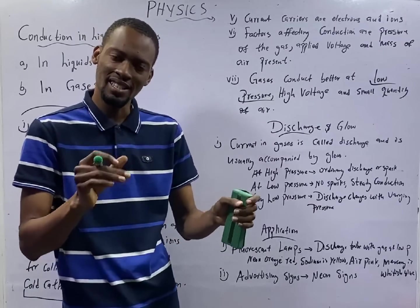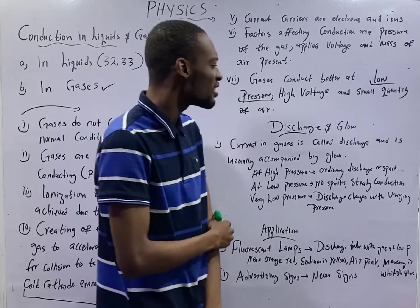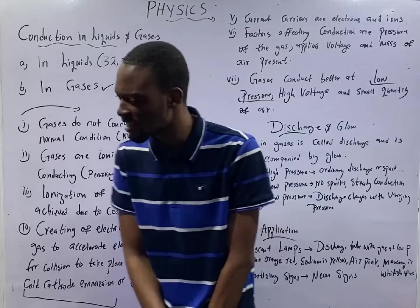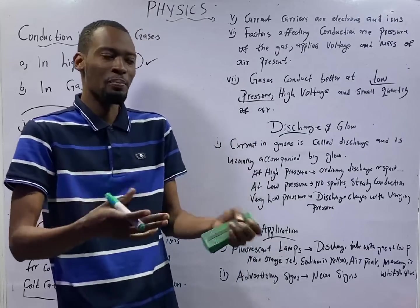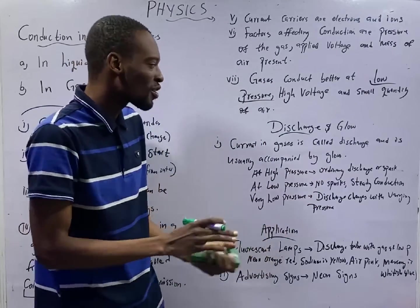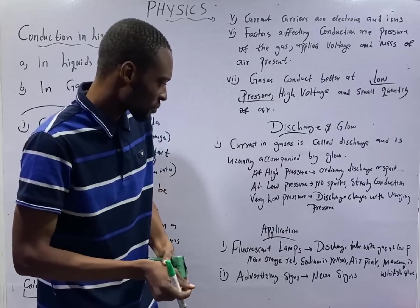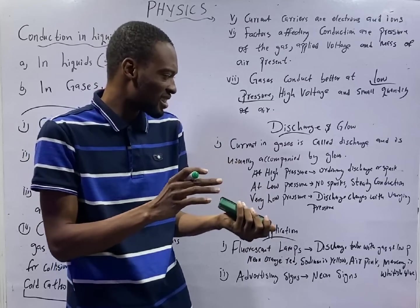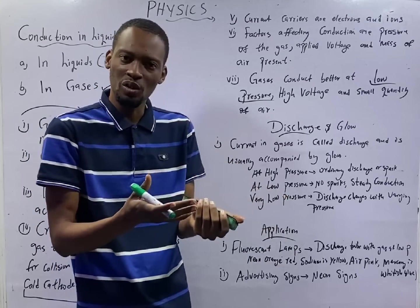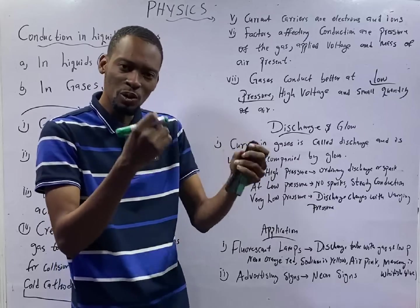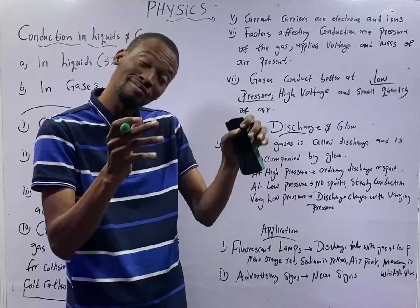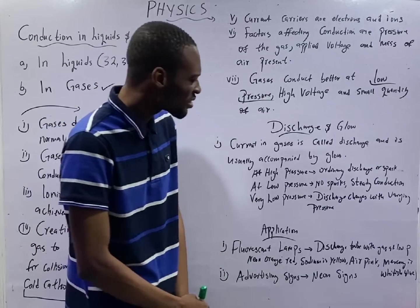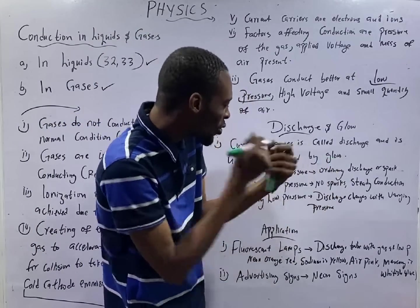Now, conduction in gases is referred to as discharge. When you say a discharge in gas or discharge in gases, you are simply saying that the gases are conducting. That is a packaged way of saying conduction in gases. But there is an interesting thing. Conduction in gases is accompanied by glow. When gas is conducting, you see they begin to glow, presence of glow, photofluorescent or whatever. Isn't it interesting? Gas is conducting, you look at it, there is a glow.